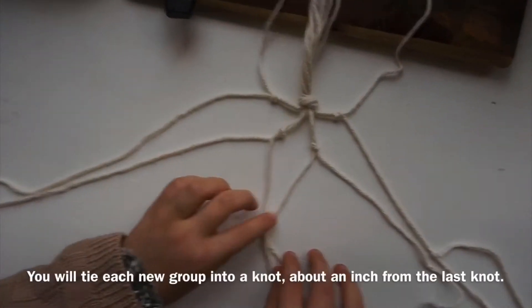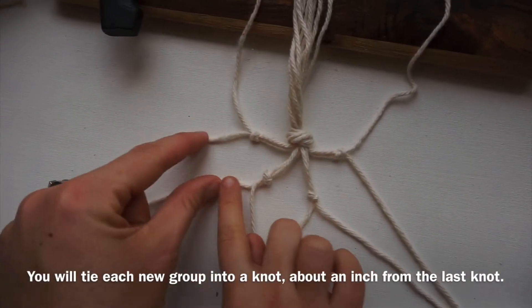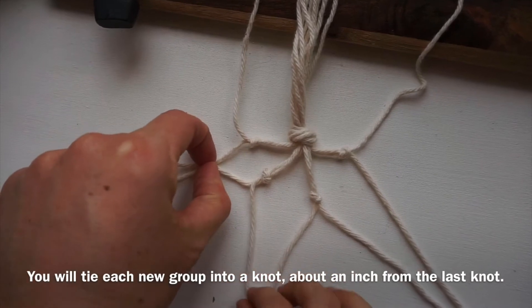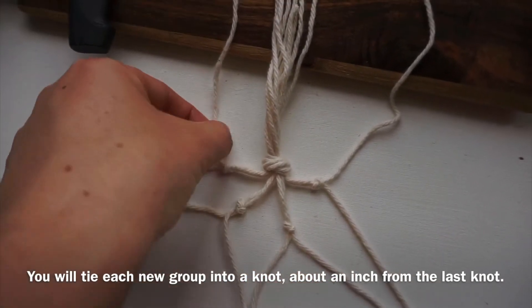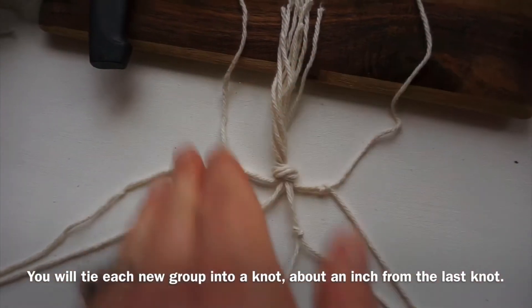Each knot has a string going to its partnering one and we're going to tie another knot about an inch away from those knots. The two on top are going to go around so that it can make a circle around the orange.